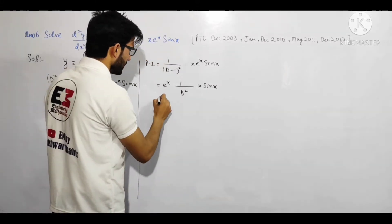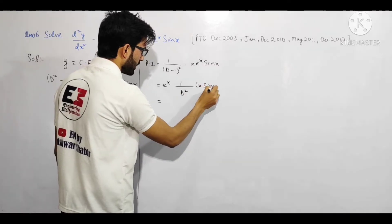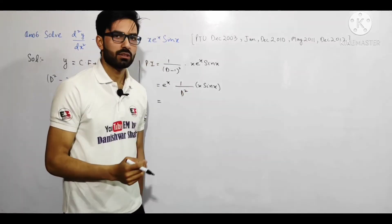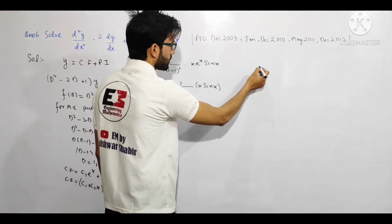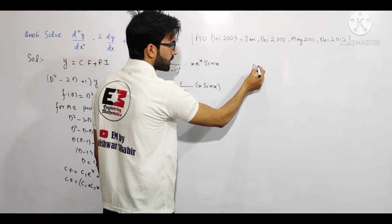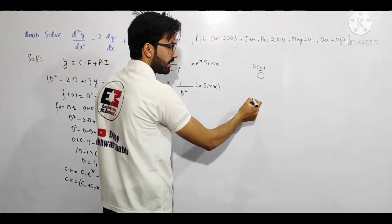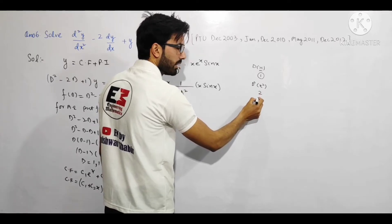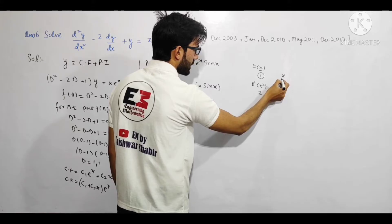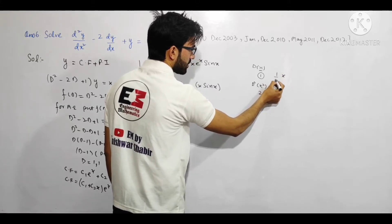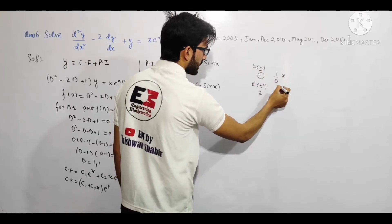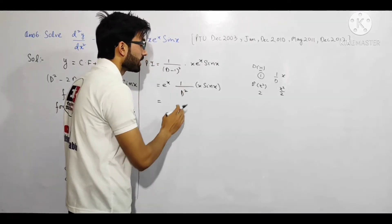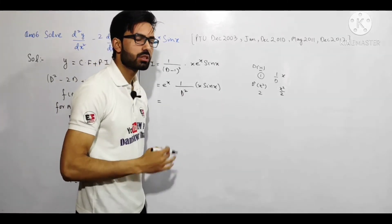Ab hmare paas PI = eˣ × (1/D²)(x sin x) hai. 1/D² ka matlab double integration hota hai — jaise D² ka matlab double differentiation hota hai, 1/D² ka matlab double integration. Toh pehle ek baar integrate karenge, phir dobara. Pehle hum 1/D × (x sin x) karenge: 1/D bachega bahar, aur bracket mein x sin x integrate karenge.